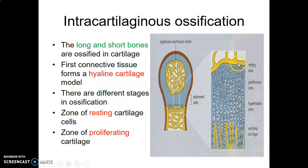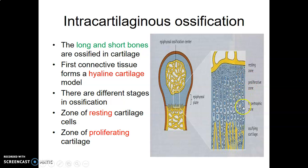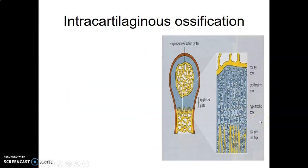The zones of endochondral ossification begin with the resting zone, where cells are quiescent. Then the proliferating zone, where cells show features of protein synthesis and mitosis — mitotic spindles and cells actively dividing. Next is the hypertrophic zone, where cells become larger. Then calcium comes in and ossification begins in the ossification zone.